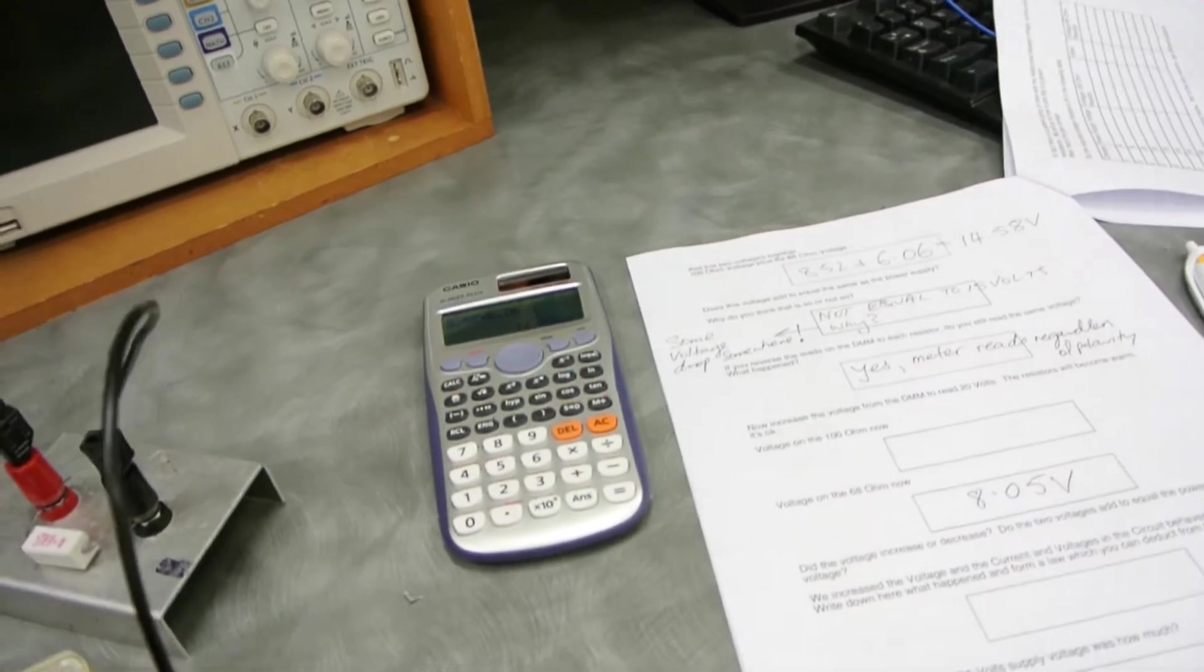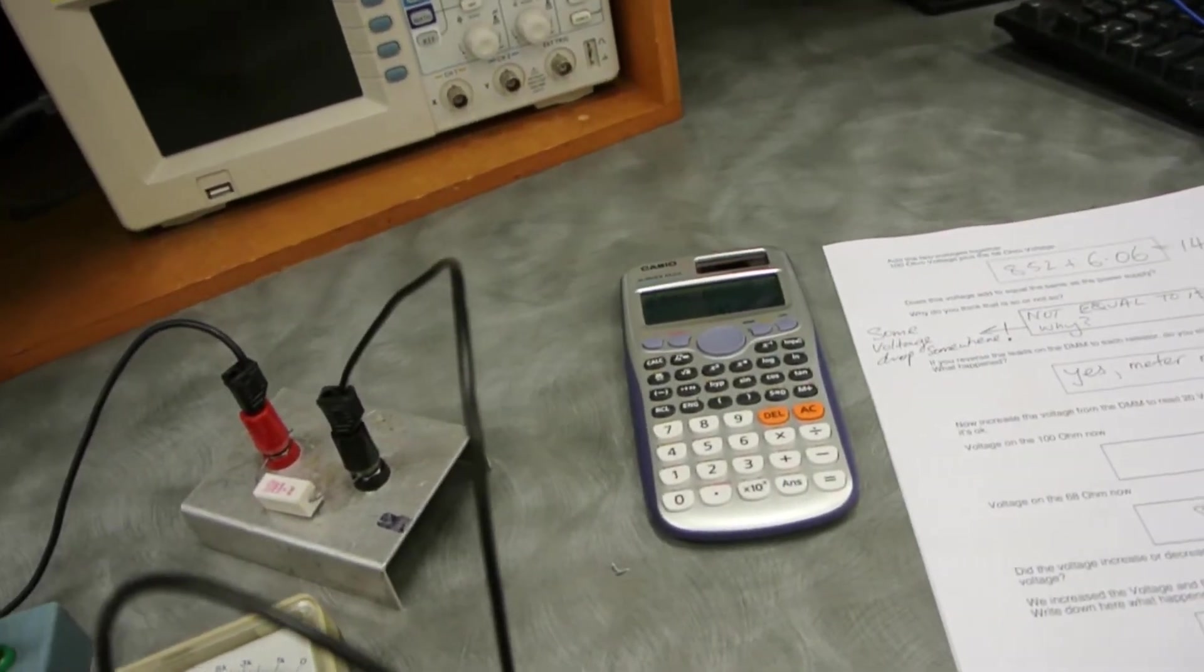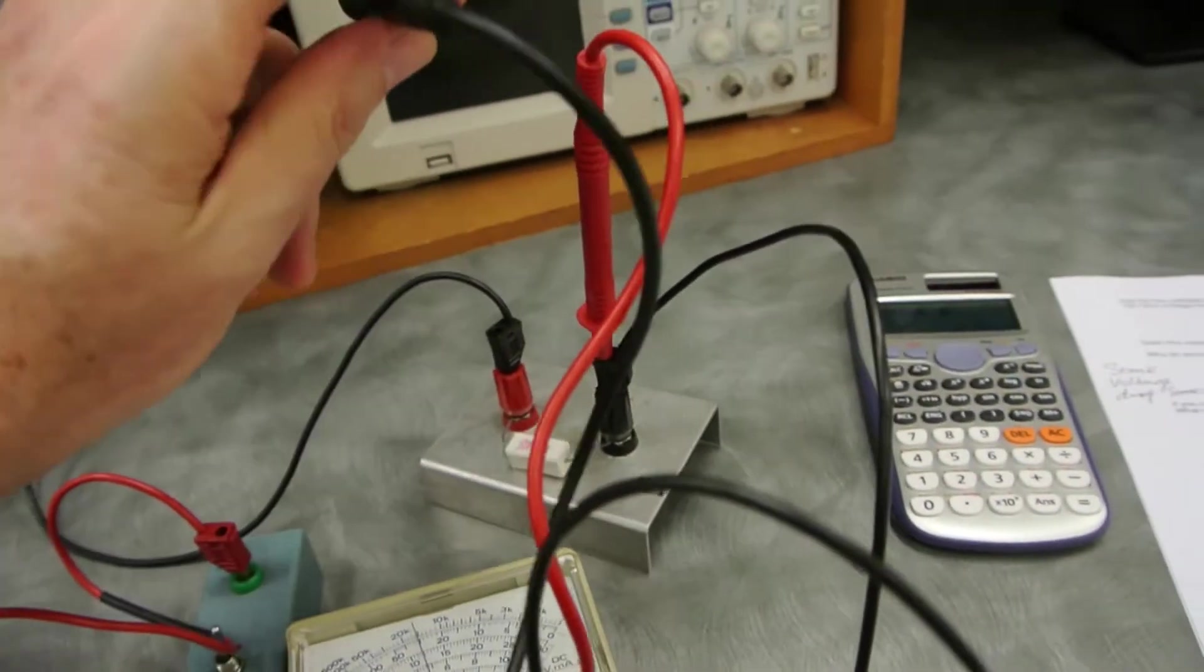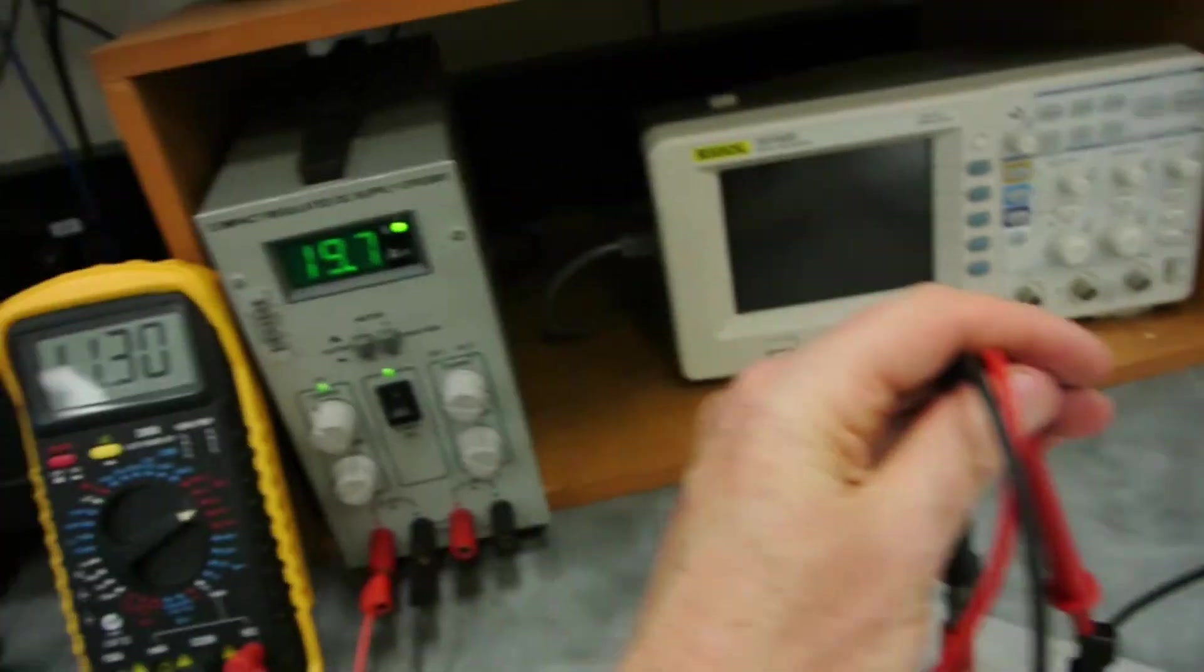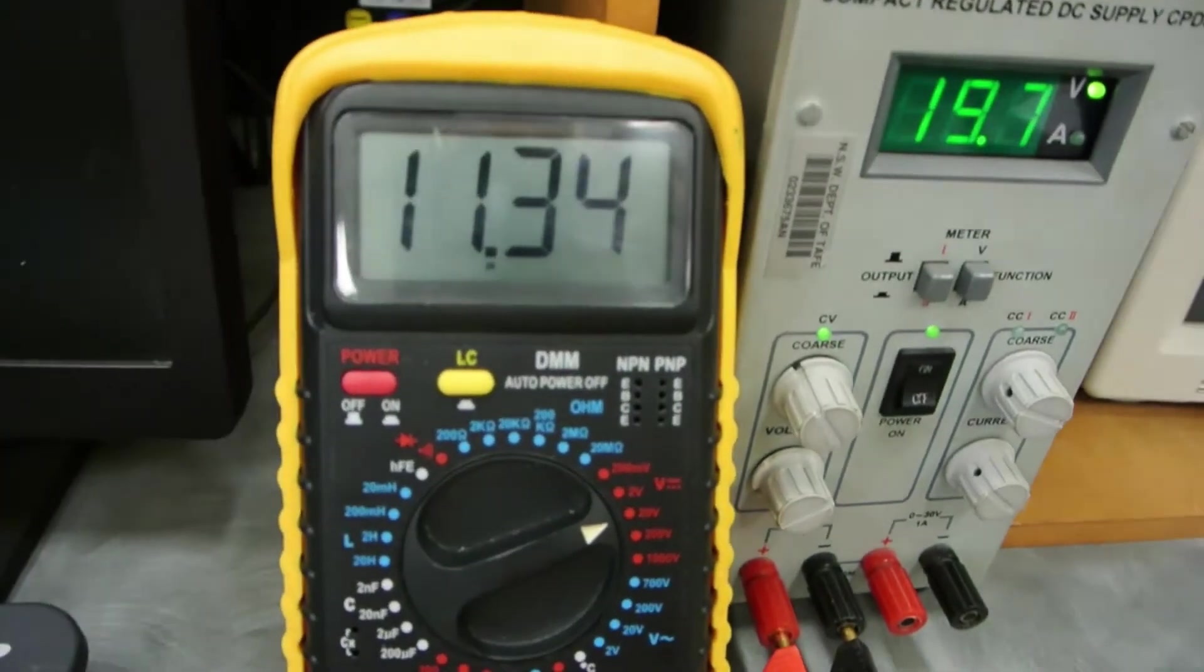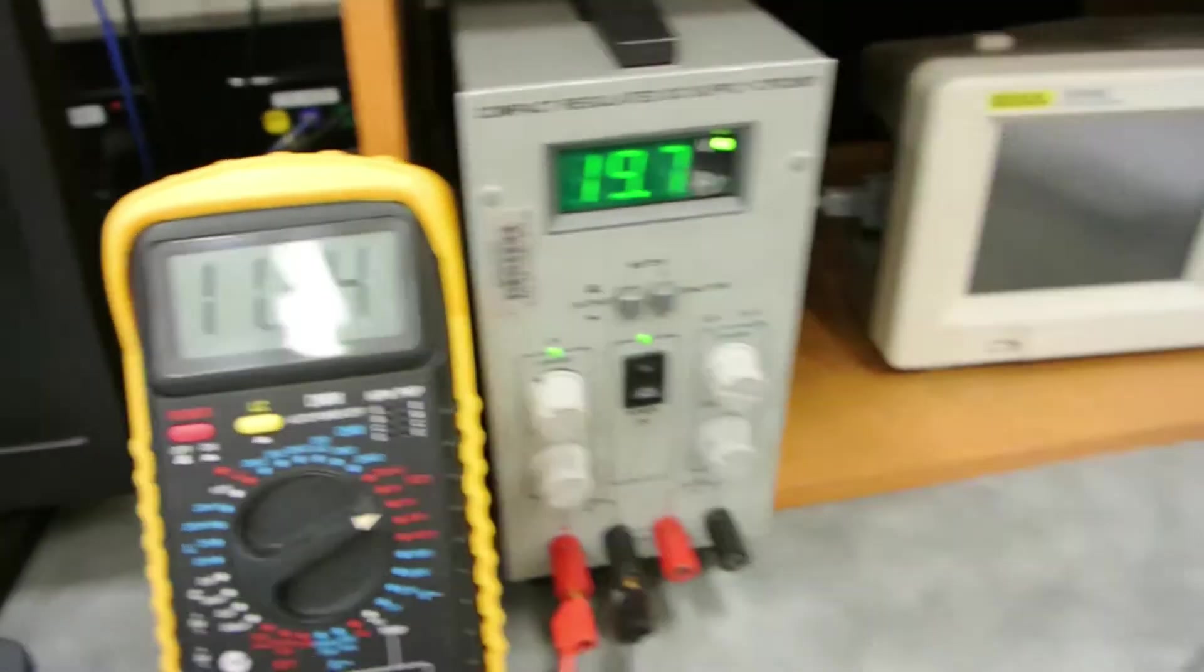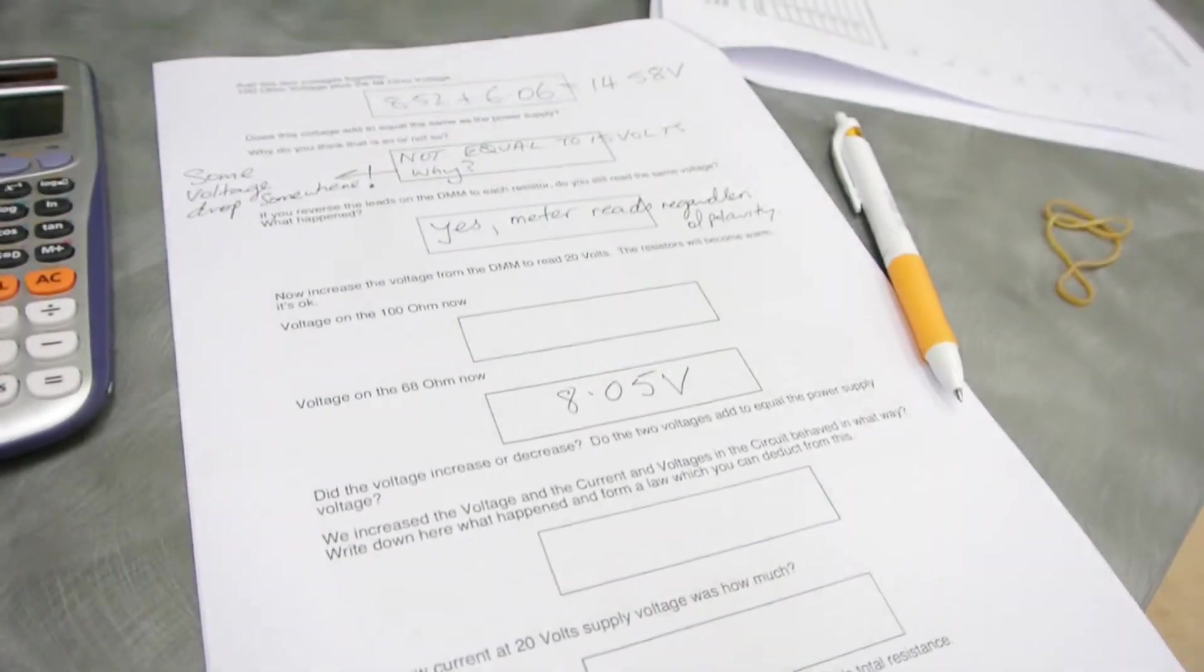I'll go across the 100-ohm resistor now, and I'll put the leads around the right way with positive towards the more positive side of the circuit, and the meter is reading 11.34 volts. So we can write that down.